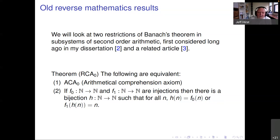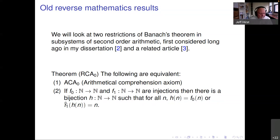One of the results that was in my thesis, and then also in a later related article, was this result: over RCA₀, ACA₀ is equivalent to a version of Banach's theorem restricted to injections on the natural numbers. Rather than saying the bijection is either the first injection or the inverse of the second one, I wrote the fact that it could be the inverse of the second one in a way more amenable to the second-order arithmetic setting.